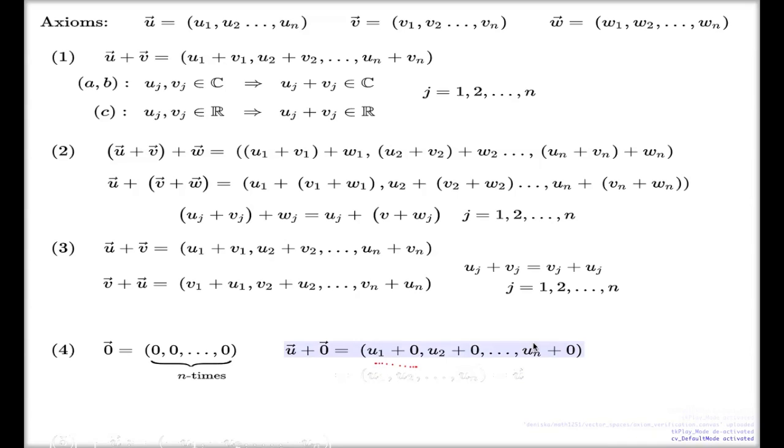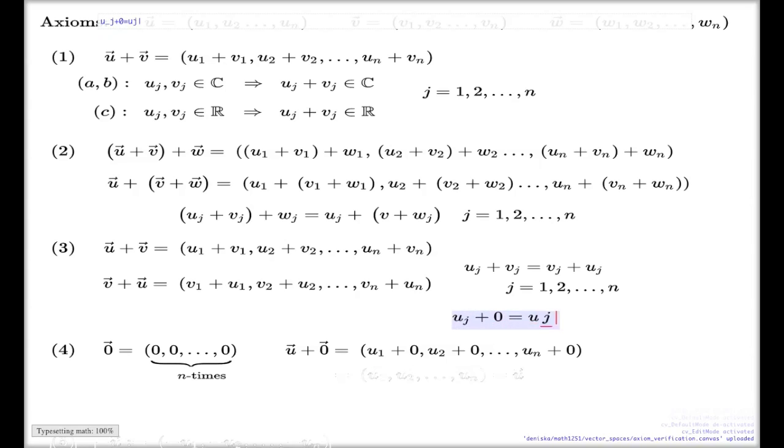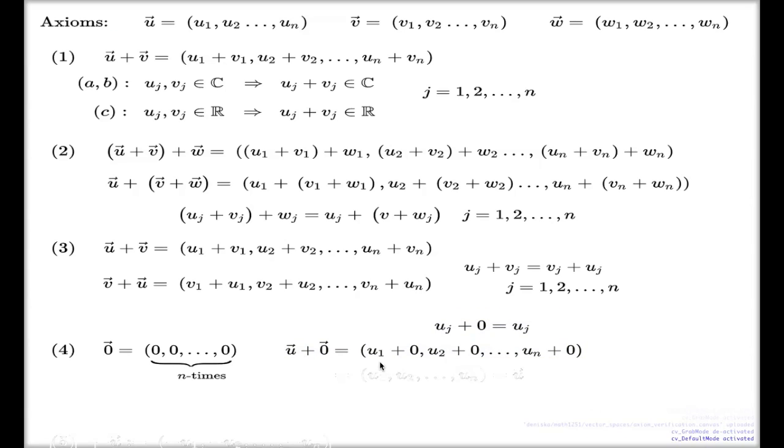And for numbers, again, for numbers we know that uj plus zero number, it's uj. We know this for numbers, and because we know it for numbers, we can apply it n times for each component individually, and we can conclude that this is my original u vector.